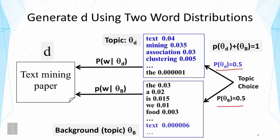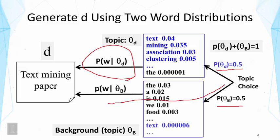In general, these probabilities don't have to be equal — you might bias toward using one topic more than the other. The process of generating a word is to first flip a coin based on the probabilities of choosing each model. If the coin shows up as heads, meaning we use the topic word distribution, we generate a word from that distribution. Otherwise, we use the background word distribution. In such a case, we have a model with some uncertainty associated with the choice of word distribution, but we can still think of it as a model for generating text data. Such a model is called a mixture model.